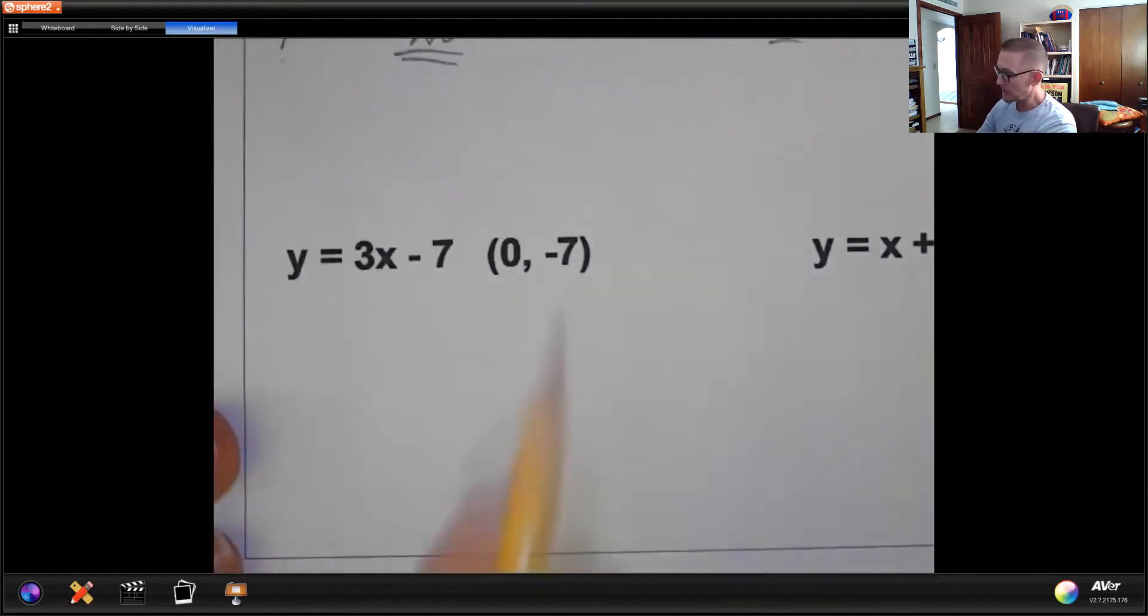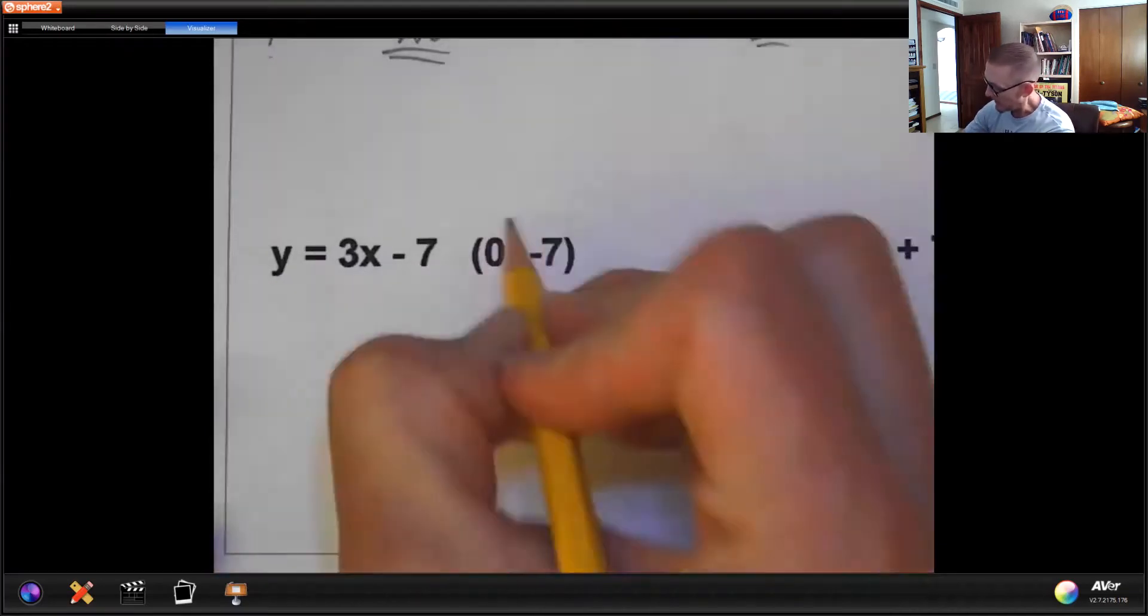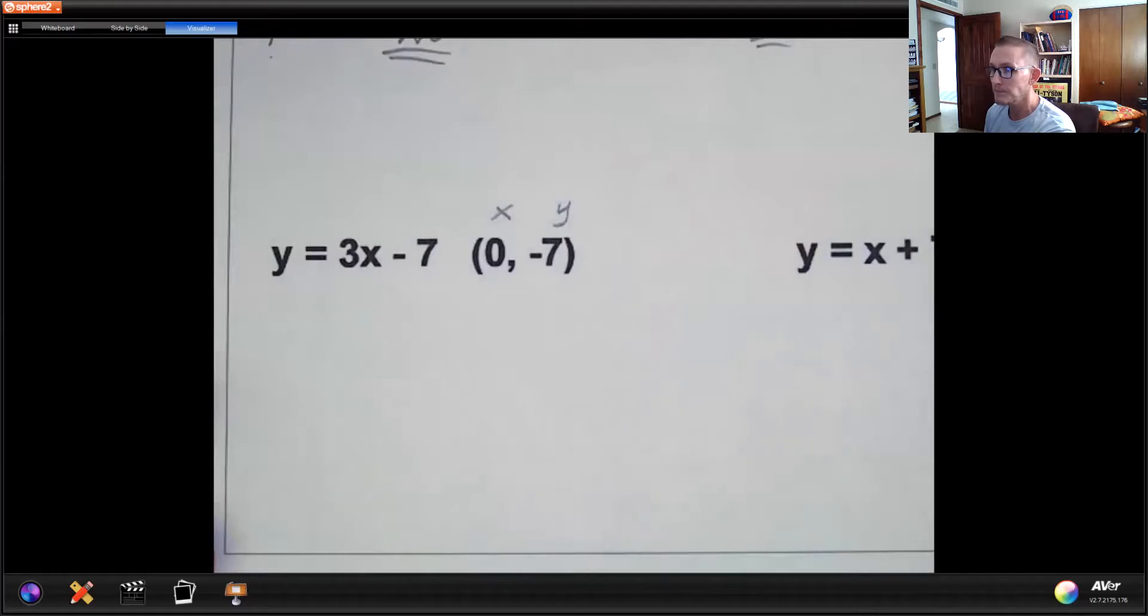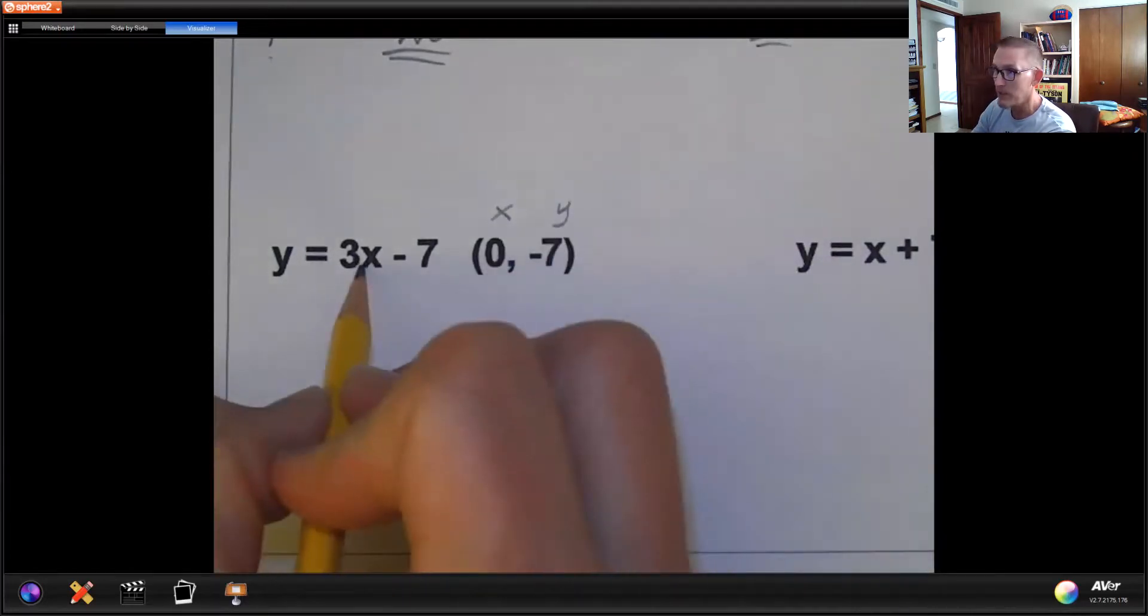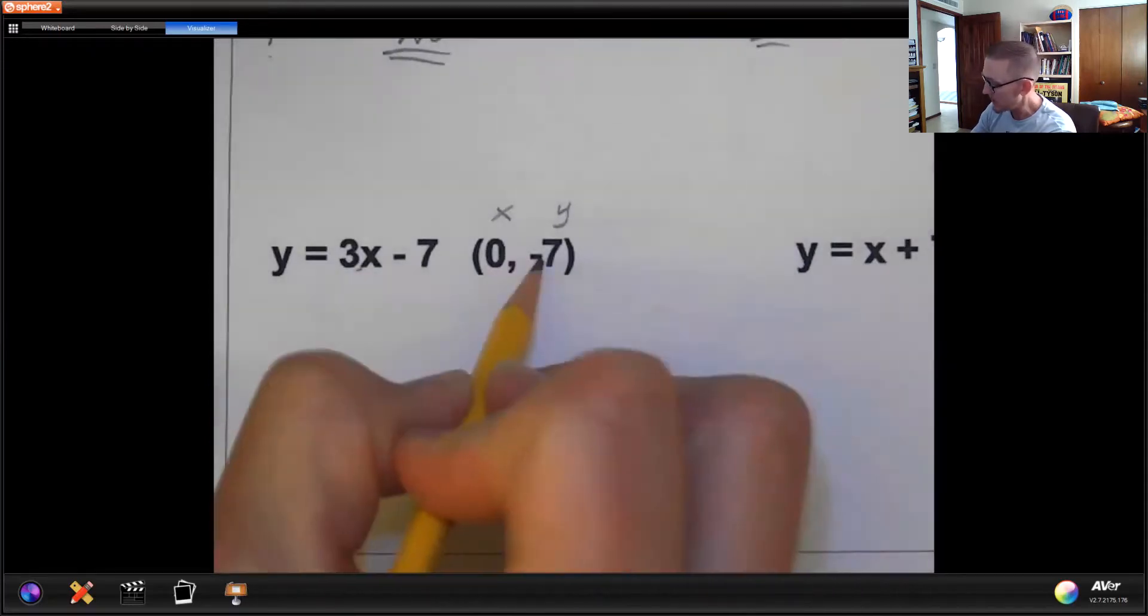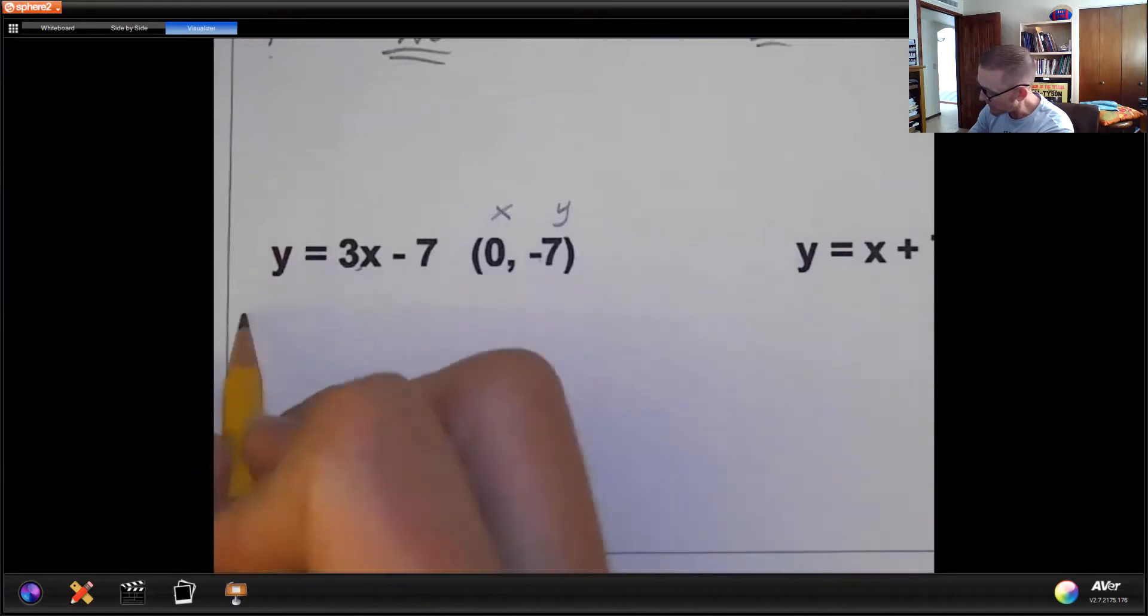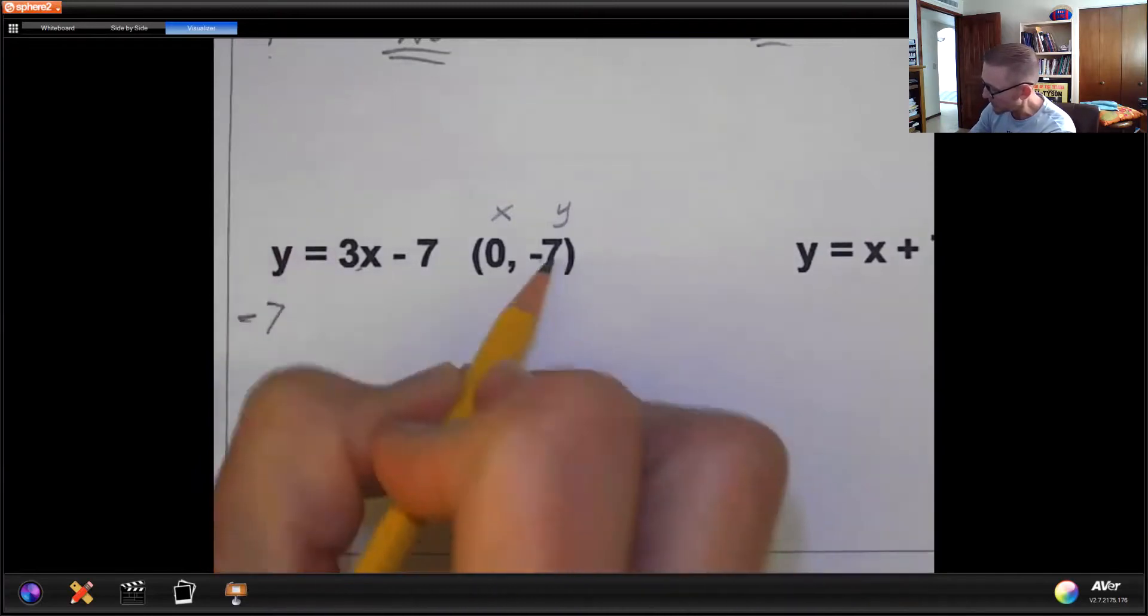So this is a linear equation that says y equals 3x minus 7. And I have my x and my y. Well, x is 0. So I'm going to plug that in here. And y is negative 7. So I'm going to plug that in here. So the y is going to become negative 7 because that's from here.